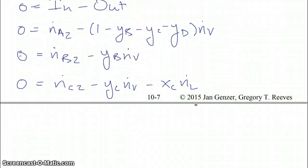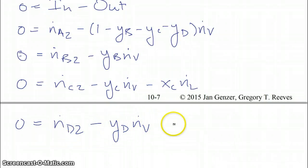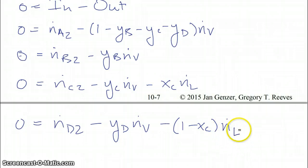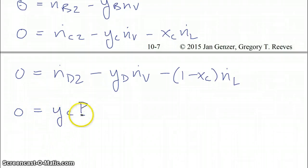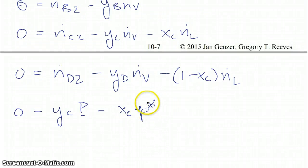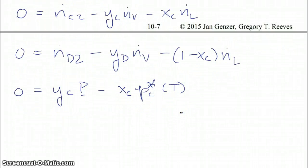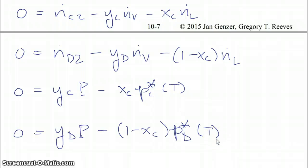Finally, the material balance for D: zero equals N.D2 coming in, minus what's leaving in the vapor stream, and also minus what is leaving in the liquid stream. We also have our two Raoult's Law relationships. Written so that zero is on one side, for C: zero equals YC times system pressure minus XC times the vapor pressure of C as a function of T, using Antoine's equation. And for D, a similar equation.